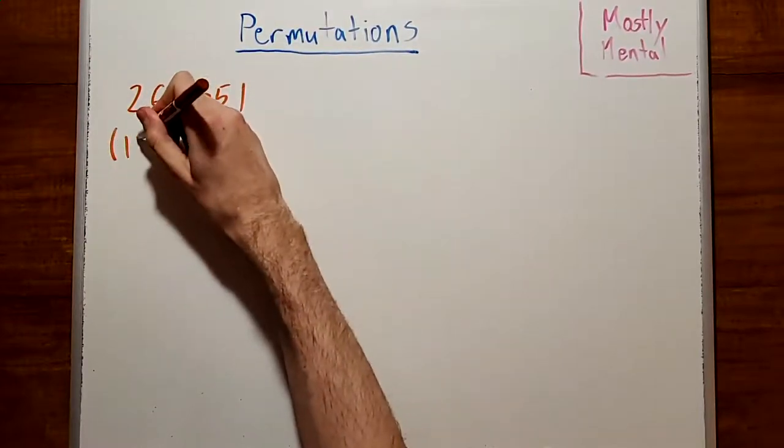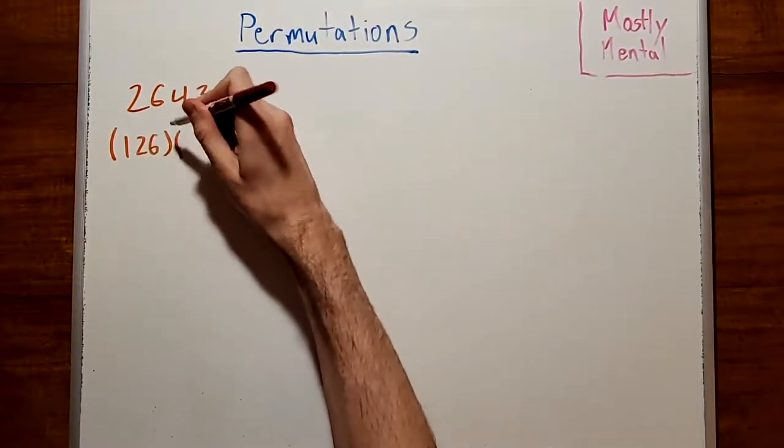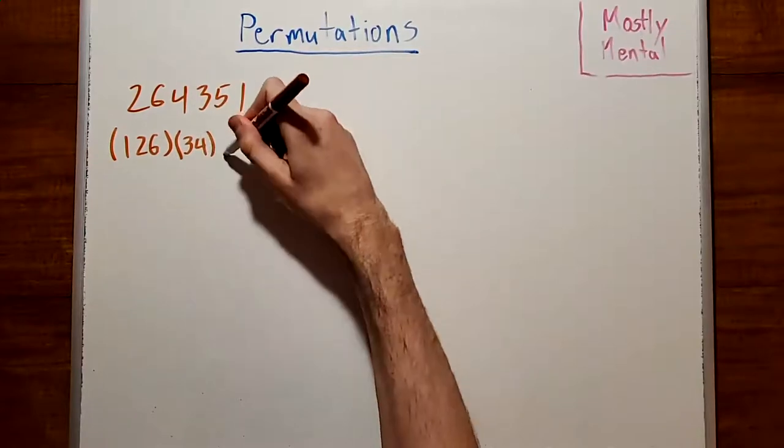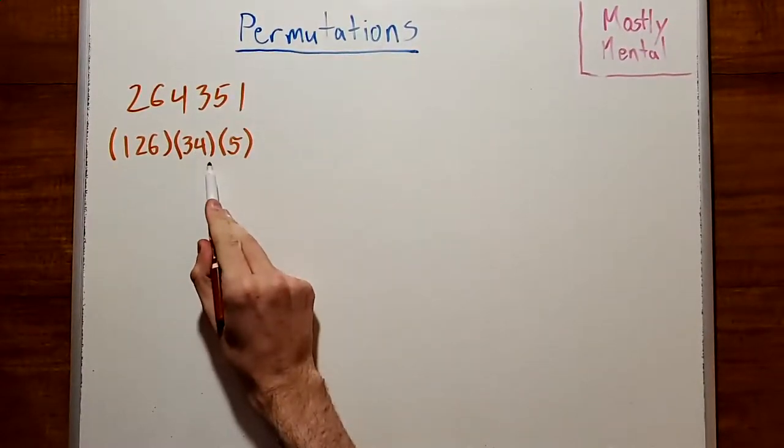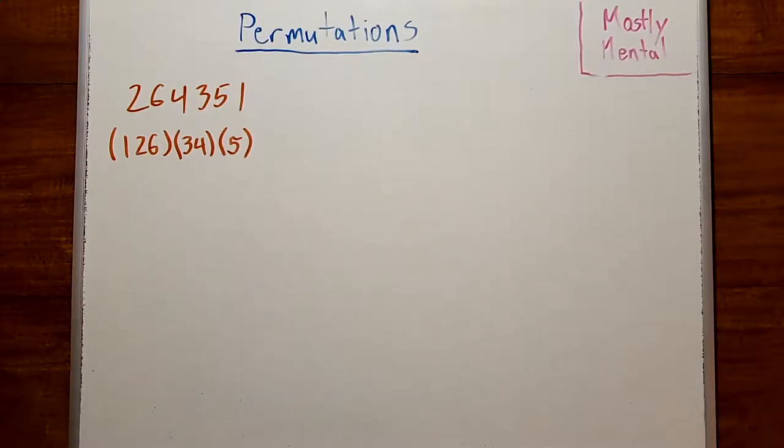which has cycle representation (1, 2, 6)(3, 4)(5), has one cycle of even length, so we call it an odd permutation.